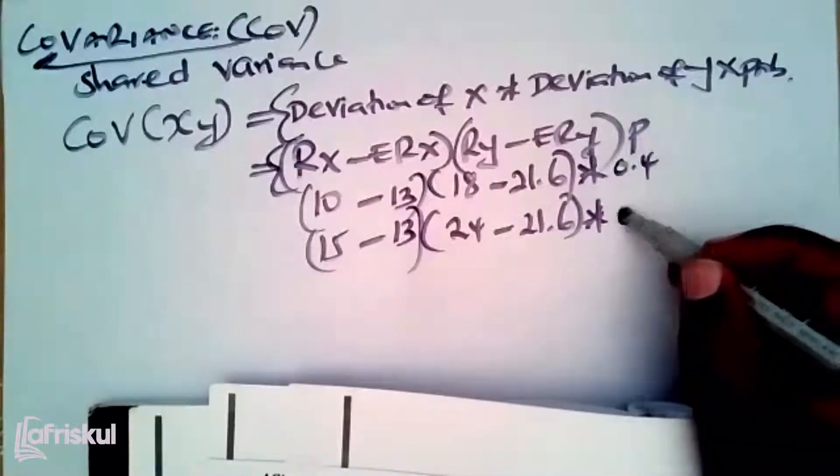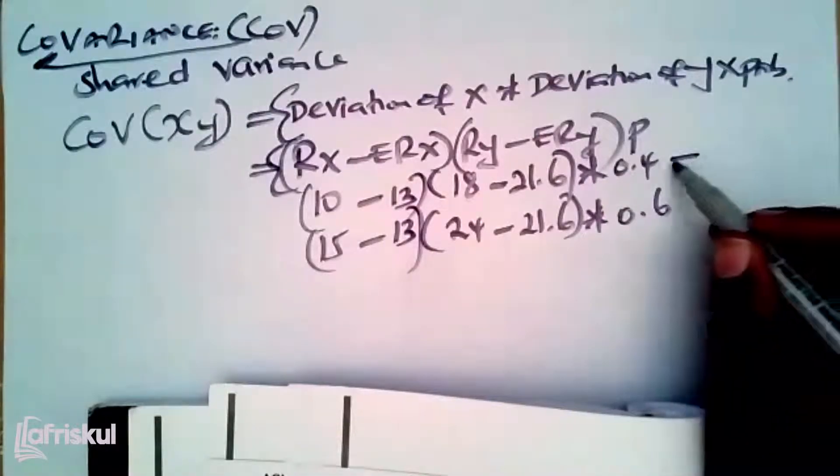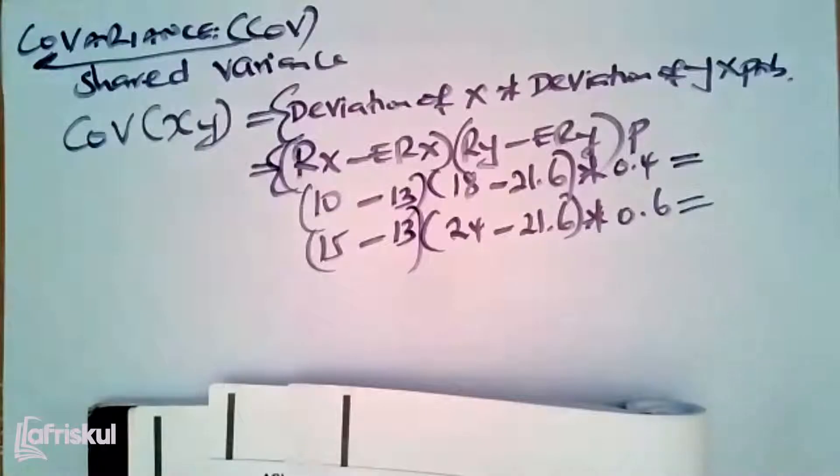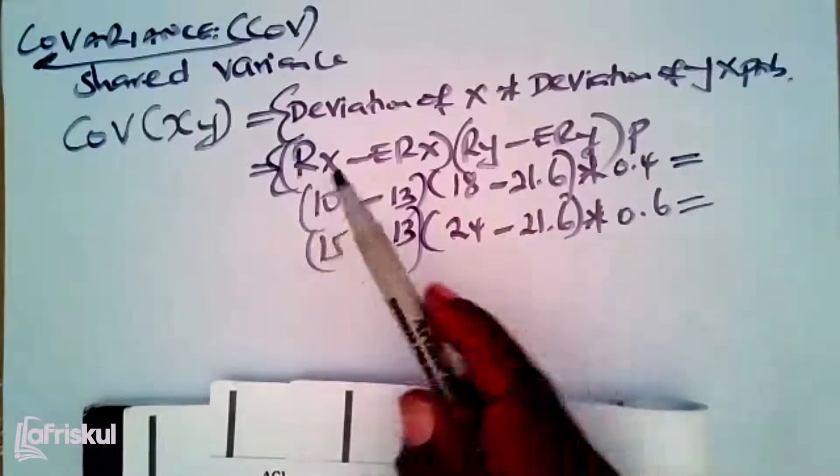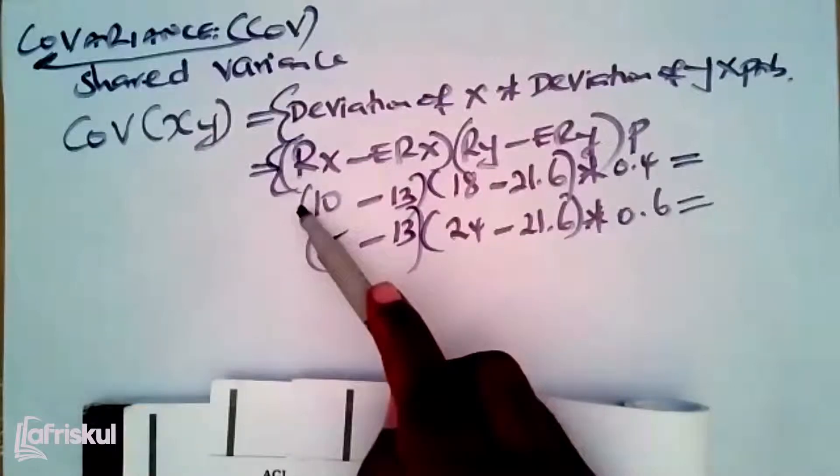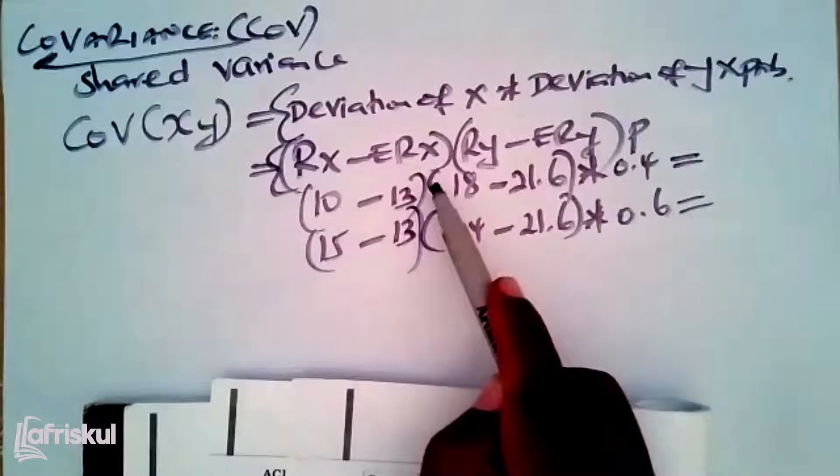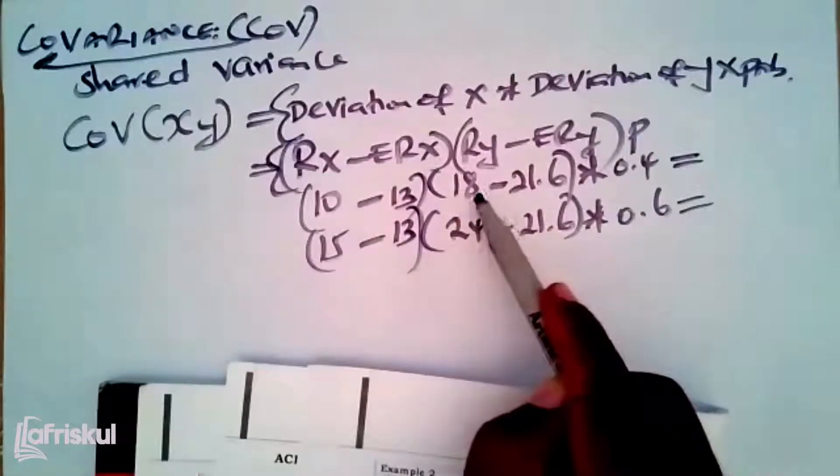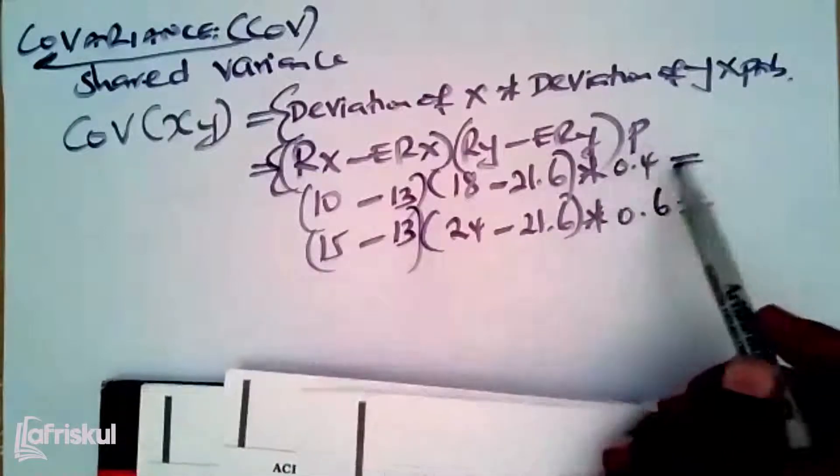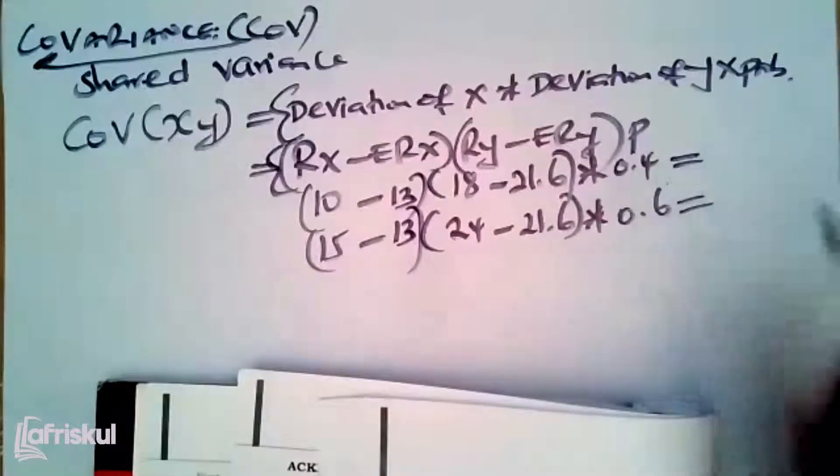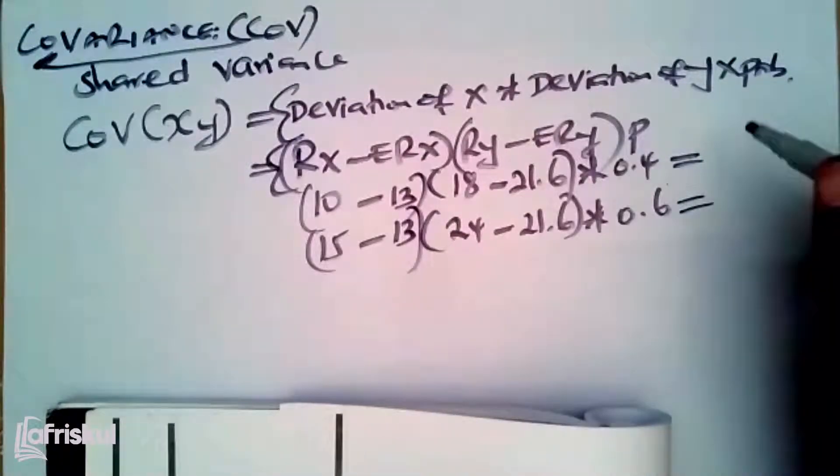Times probabilities - also which we usually use the ones that we are given there, 0.6 and 0.4. So here you have to be very careful. Use your brackets very well. Using your calculator, you simply open brackets, say 10 minus 13, you close, times open again 18 minus 21.6, close, times 0.4, and then you give me an answer here.